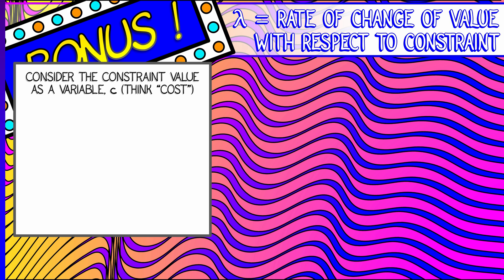Well, consider the constraint value as involving a new variable, c. Think of it as a cost. And we're going to look at a constraint where g of x equals c. Okay, now what we're going to do is rewrite the Lagrange equations to optimize f of x when constrained to the level set g minus c equals 0. That is where g of x equals c. And then we're going to vary c.